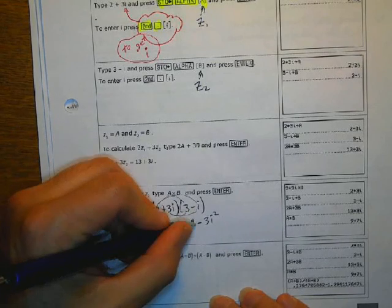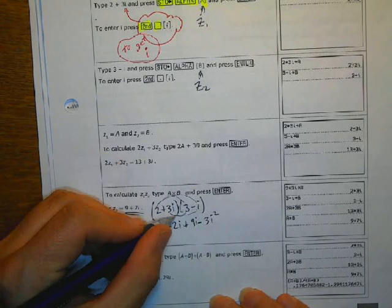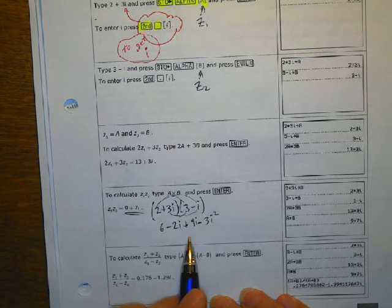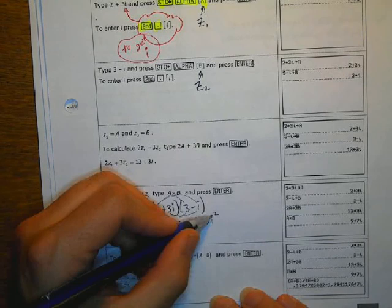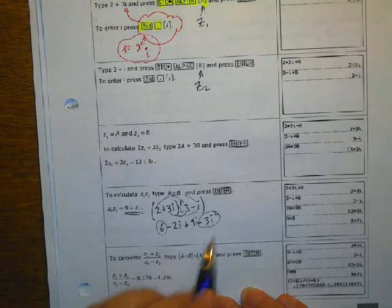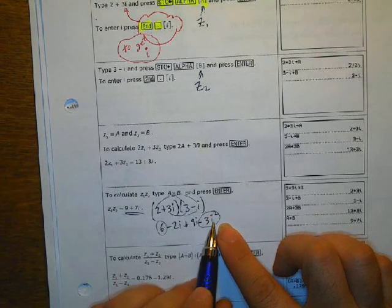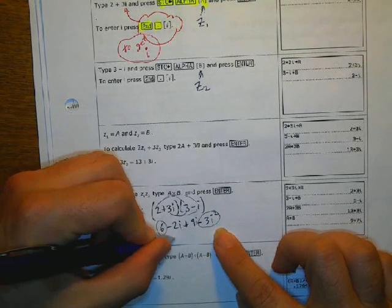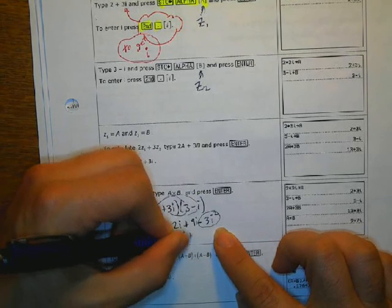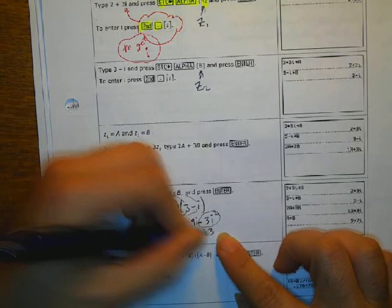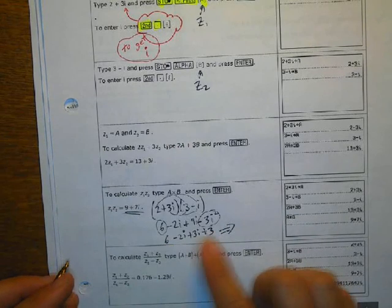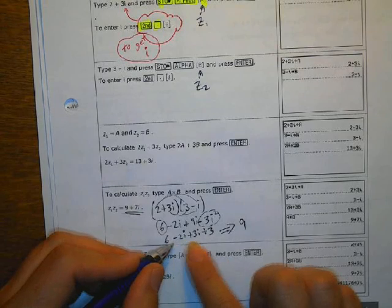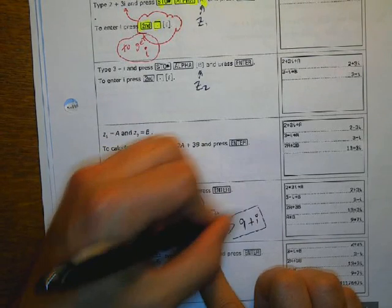I forgot the i there. 3i times 3. Okay. All right. Glad I fixed that before making a mistake. So now I've got, this is 6, and this is minus 3i squared. So we know i squared is negative 1. So negative 3 times negative 1, that's going to be positive 3. So I've got 6 minus 2i plus 3i plus 3. So now I can combine my like terms, and I end up with 6 plus 3, which is 9. And negative 2i plus 3i is plus i.